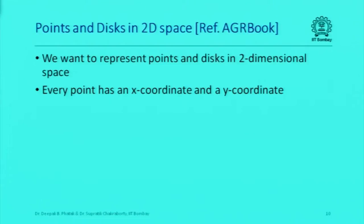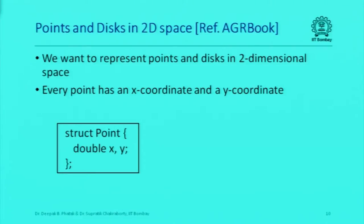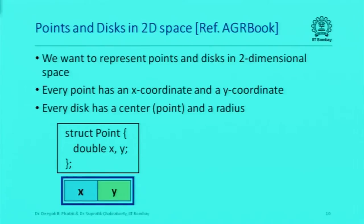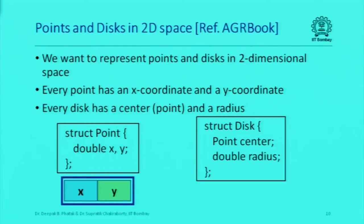Here is a simple example about points and discs in two-dimensional space, motivated by Professor Ranaday's book. A point in two-dimensional space has an x and a y coordinate, so we have two members x and y, both of type double. This can be visualized as two chunks of storage allocated — one for storing x and one for y.